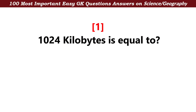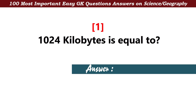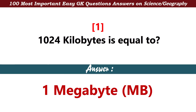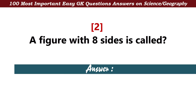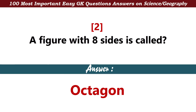1024 kilobytes is equal to — Answer: 1 megabyte. A figure with 8 sides is called — Answer: Octagon.